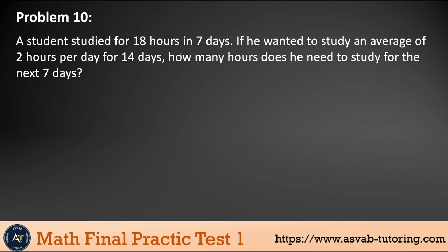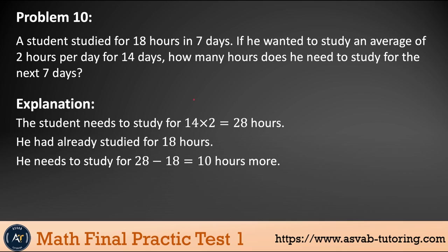Problem 10: A student studied for 18 hours in seven days. He wanted to average two hours per day for 14 days. How many more hours does he need to study in the next seven days? Two hours per day × 14 days = 28 hours total needed. He already studied 18 hours, so 28 − 18 = 10 more hours needed.